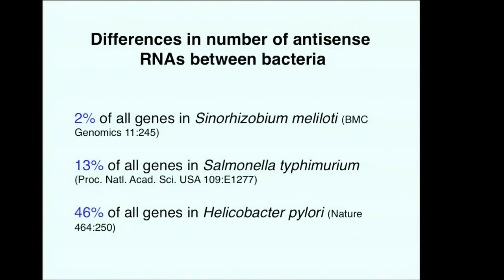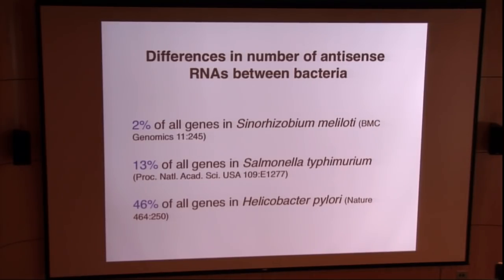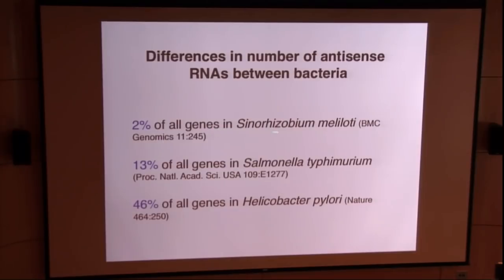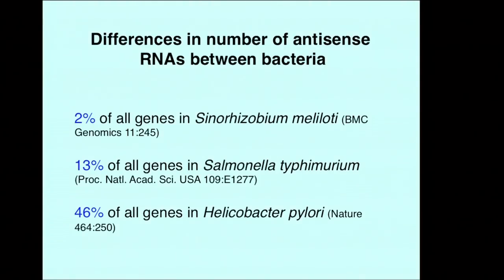With all the deep sequencing now, there are vast amounts of deep sequencing data of the transcriptome, and you'd think this problem would be easier than it is. If you look at the literature for different bacteria, the number of antisense RNAs reported varies: for rhizobium species, 2% of all genes; for Salmonella, 13%; for Helicobacter, 46%. Do the different bacteria really vary in the number of antisense RNAs, or is this a consequence of how data is analyzed or reported?